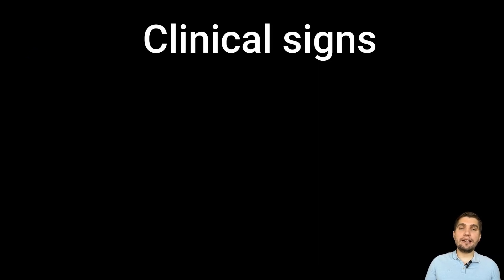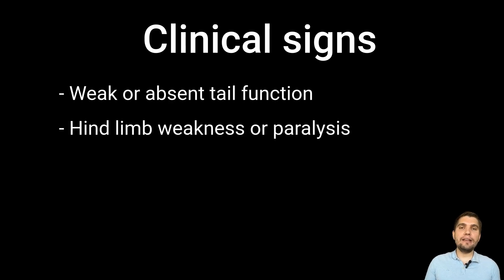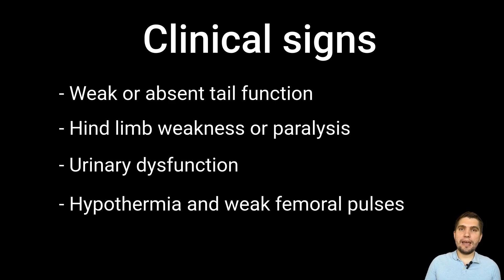Clinically, these cats commonly present with the following signs: weak or absent tail function, hind limb weakness or paralysis, urinary dysfunction, including inability to urinate voluntarily, and hypothermia, as well as reduced femoral pulses, indicating compromised perfusion and potentially shock.